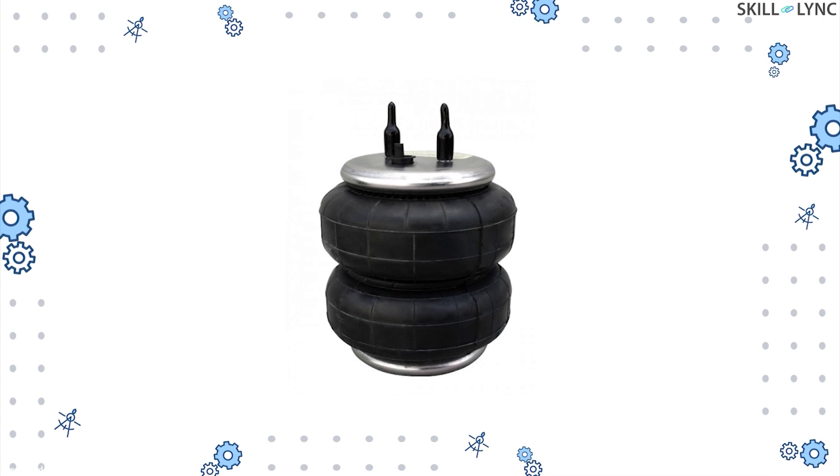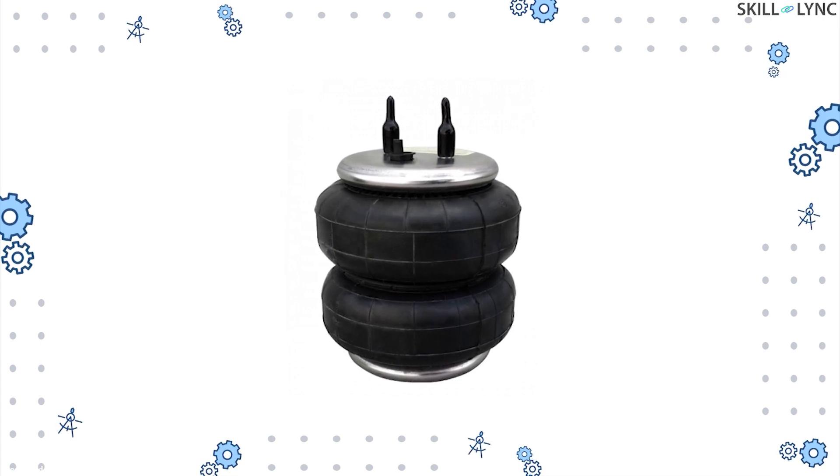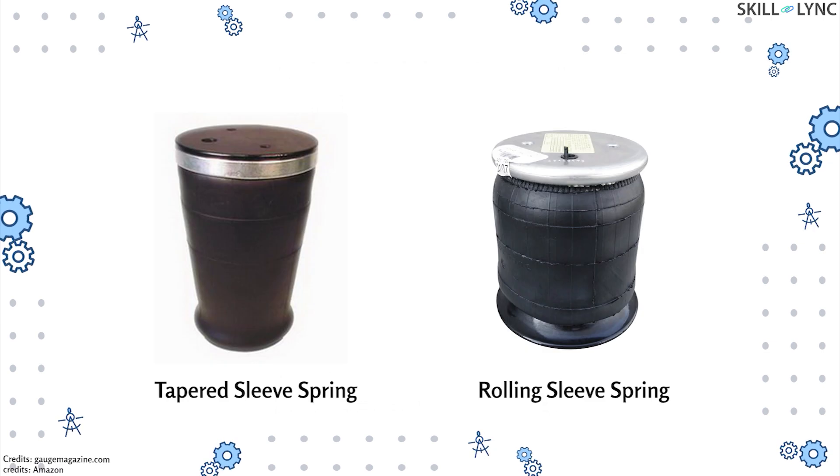The tapered sleeve spring and the rolling sleeve spring have longer stroke length and are of smaller diameter. Their spring rate is linear and they usually suit the rear suspension.